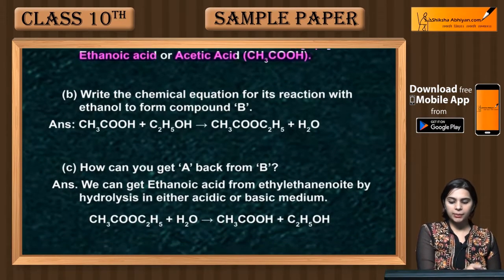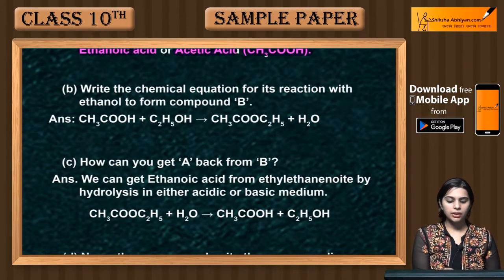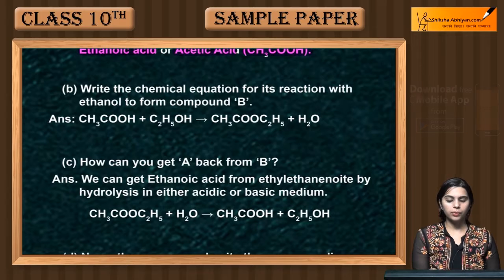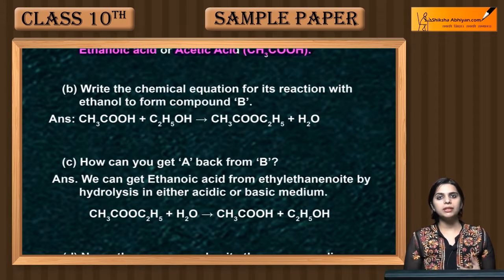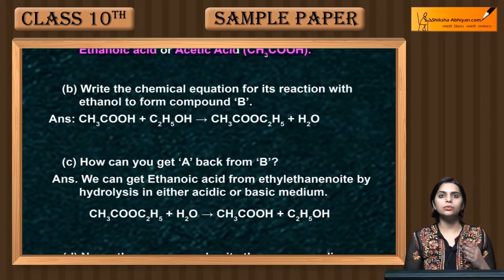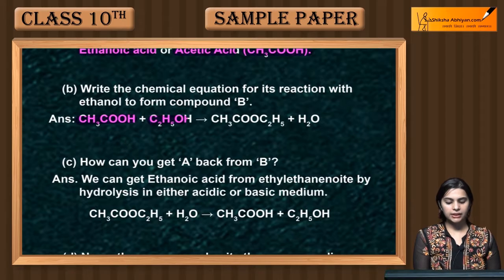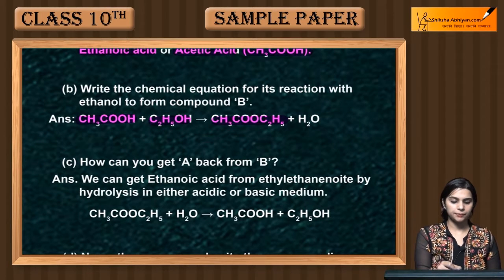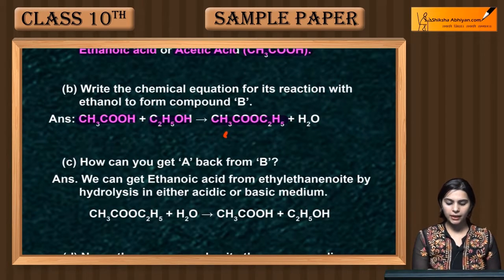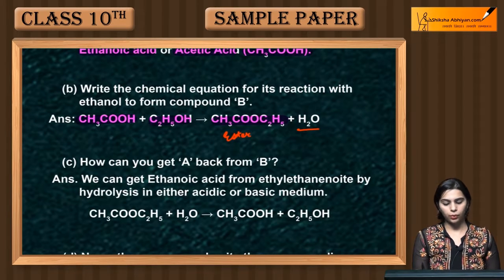Write the chemical equation for its reaction with ethanol to form compound B. If acetic acid (CH3COOH) reacts with ethanol, then the compound formed is an ester. Ester is a sweet smelling compound, plus water is produced.